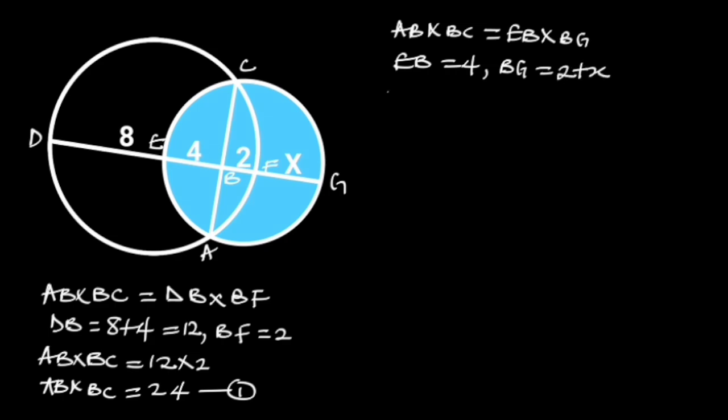Substituting these values in the formula will give us AB times BC is equal to 4 times 2 plus x.